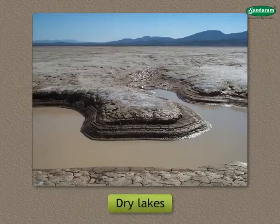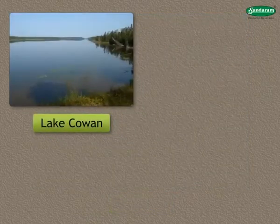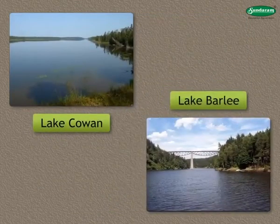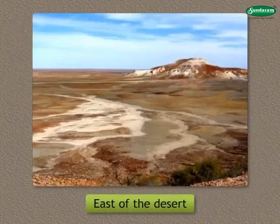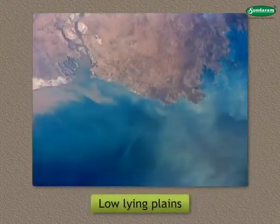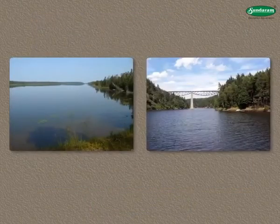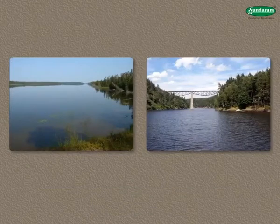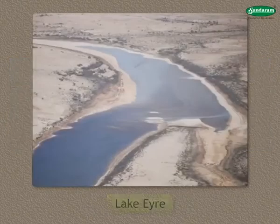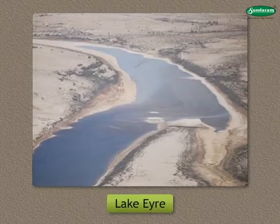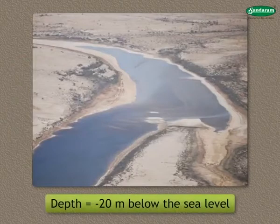There are many dry lakes like Lake Cowan, Lake Bali, etc. To the east of the desert region lie low-lying plains formed by the deposition of many rivers. There are many lakes in the southern part of this central plain region. Of these, Lake Eyre has a depth of minus 20 metres below sea level.